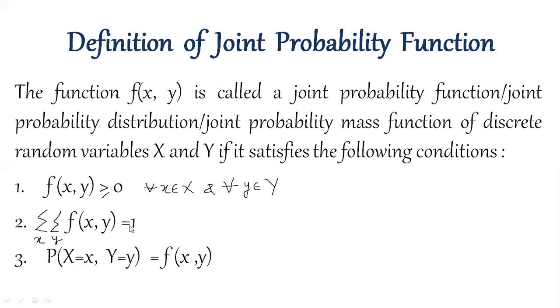Double summation f(x,y) is equal to 1. What does double summation mean? For all the pairs of x and y, the probability's sum should be 1.